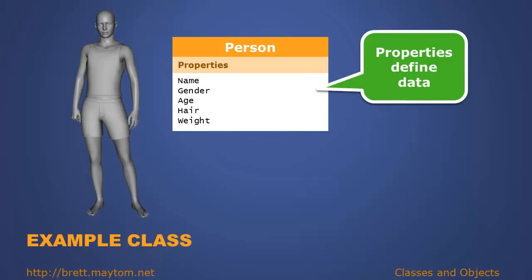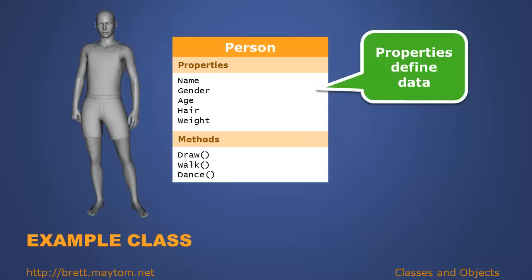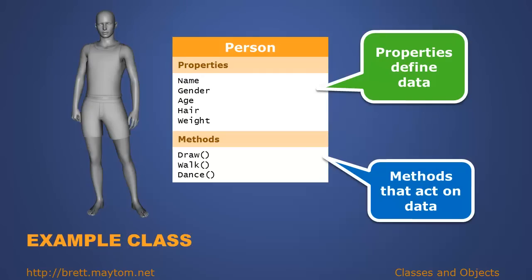These characteristics are what we call properties. A property is basically the data that describes a person. Next are the methods. In object-oriented terms, methods are actions we'd like to perform on that data. For example, in a program we might have a draw method which renders the model on screen, a walk method that animates the person, and a dance method which allows that object to dance. Thus, methods act on data.